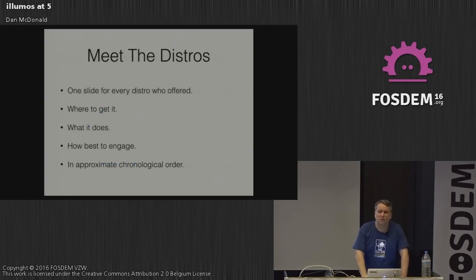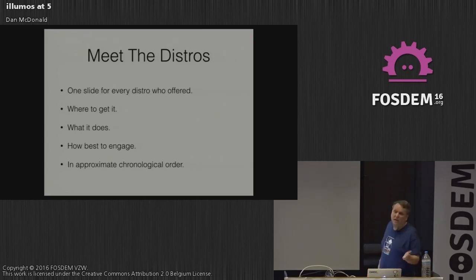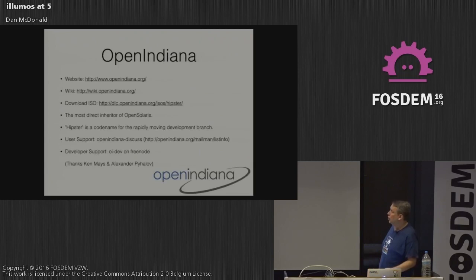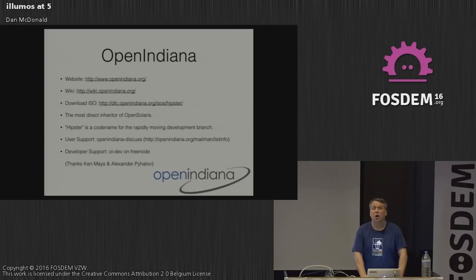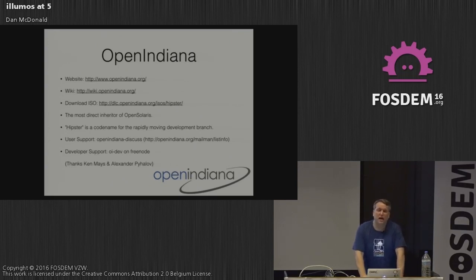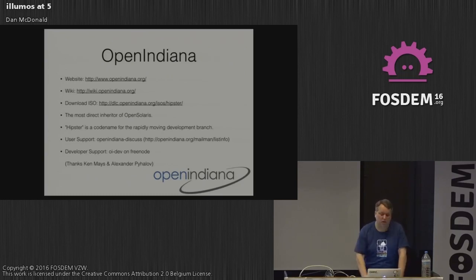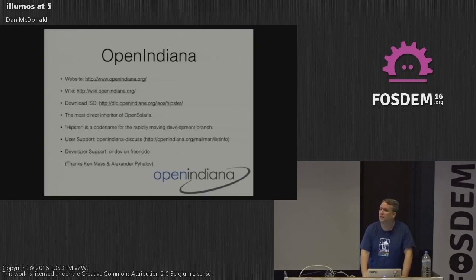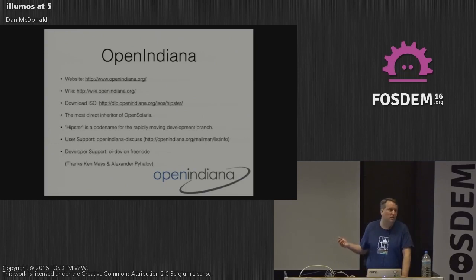I'll give one slide for every distro. OpenIndiana is the most direct inheritor of OpenSolaris — for those who used OpenSolaris, OI will be an equally comfortable experience. The hipster branch is where all the action is now, so when people talk about OI hipster, that's what they mean. There's a mail alias for user support, they're on Freenode, and they're more than happy to help. We have a strong IRC presence in Illumos — every distro has a channel as well as #illumos.